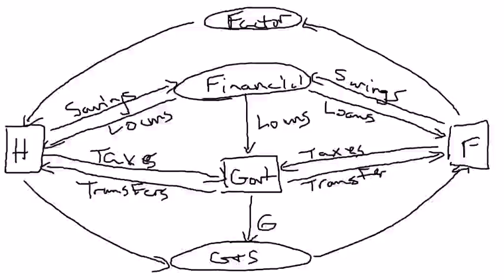It's easiest probably to focus in on government spending, so I'm just going to go ahead and do that. What I want you to understand is the argument for why you might think that if the government spends a little bit more, that will increase the size of the economy and maybe increase employment. I also want you to understand some limitations to that argument, and we can do all that with the circular flow diagram.